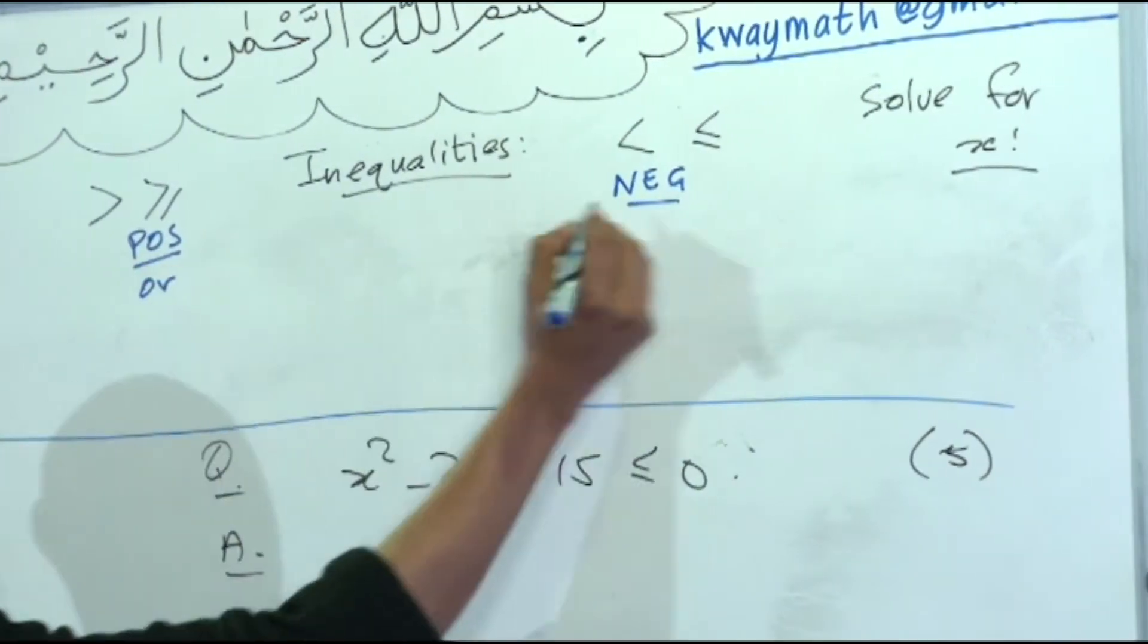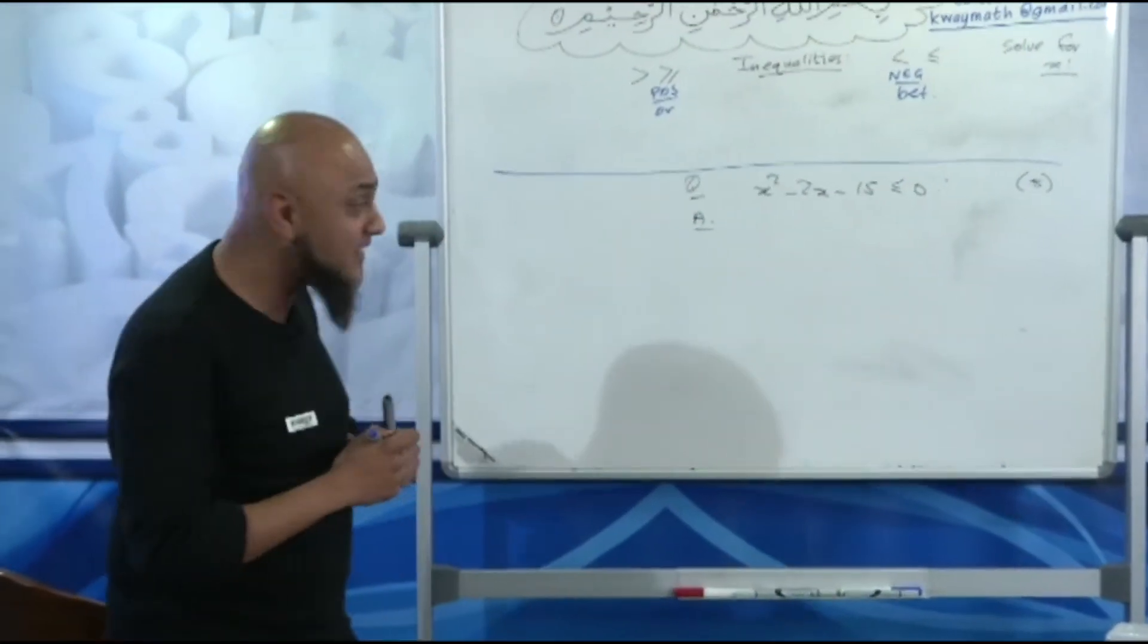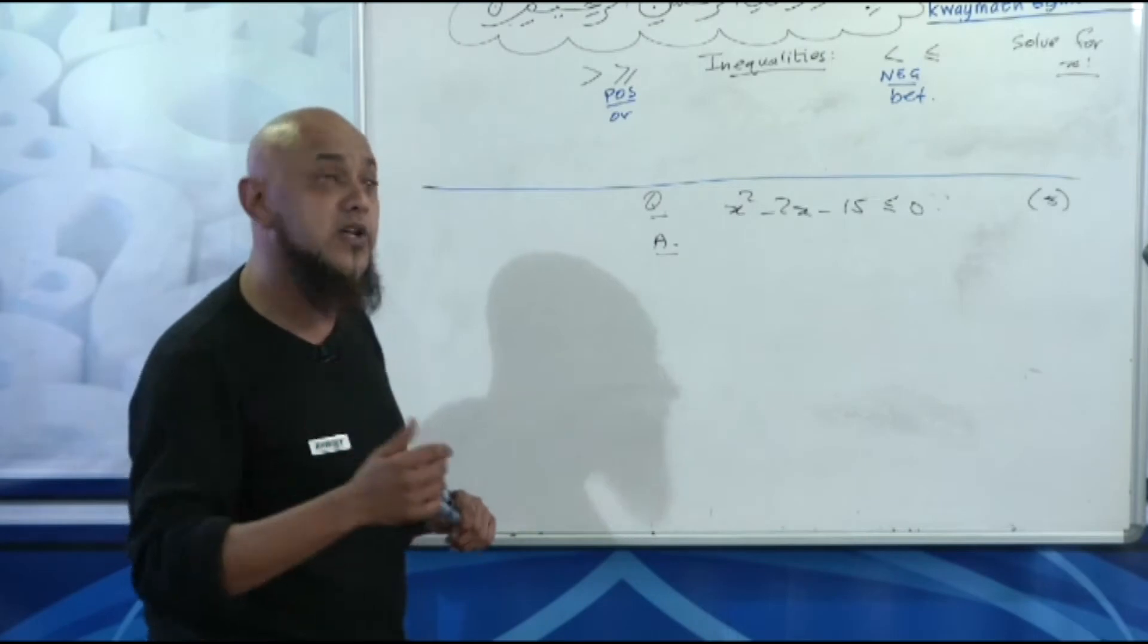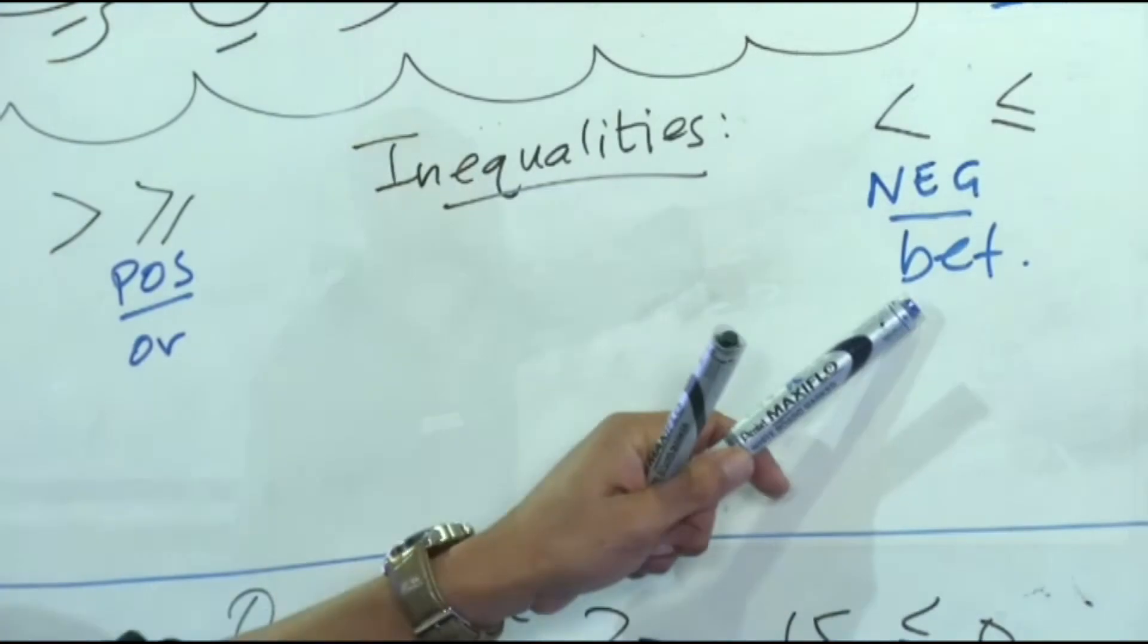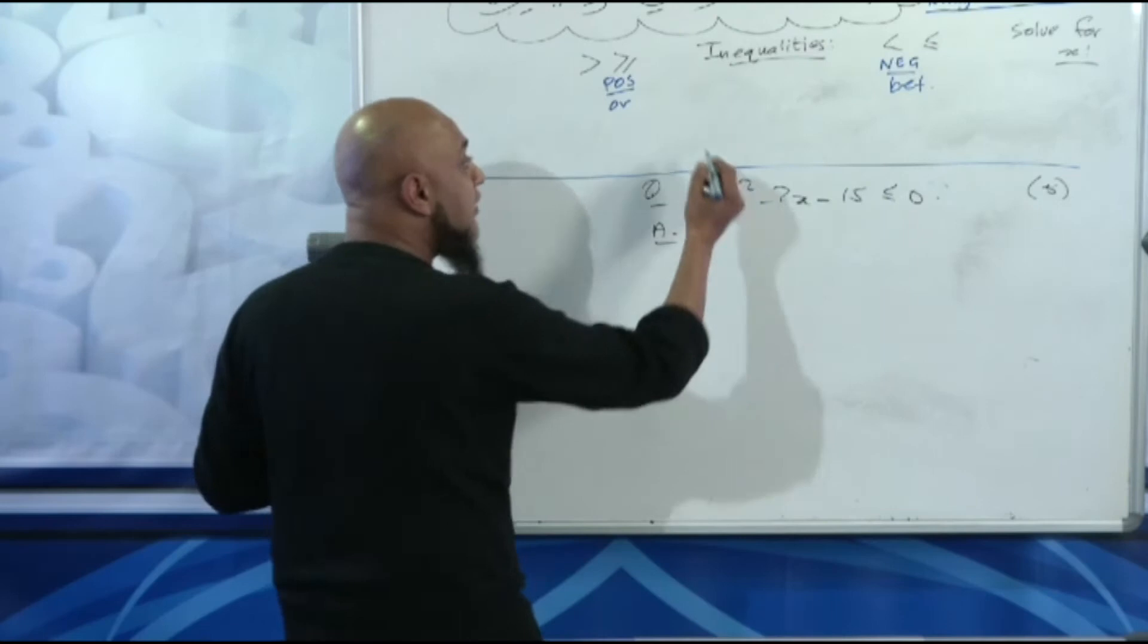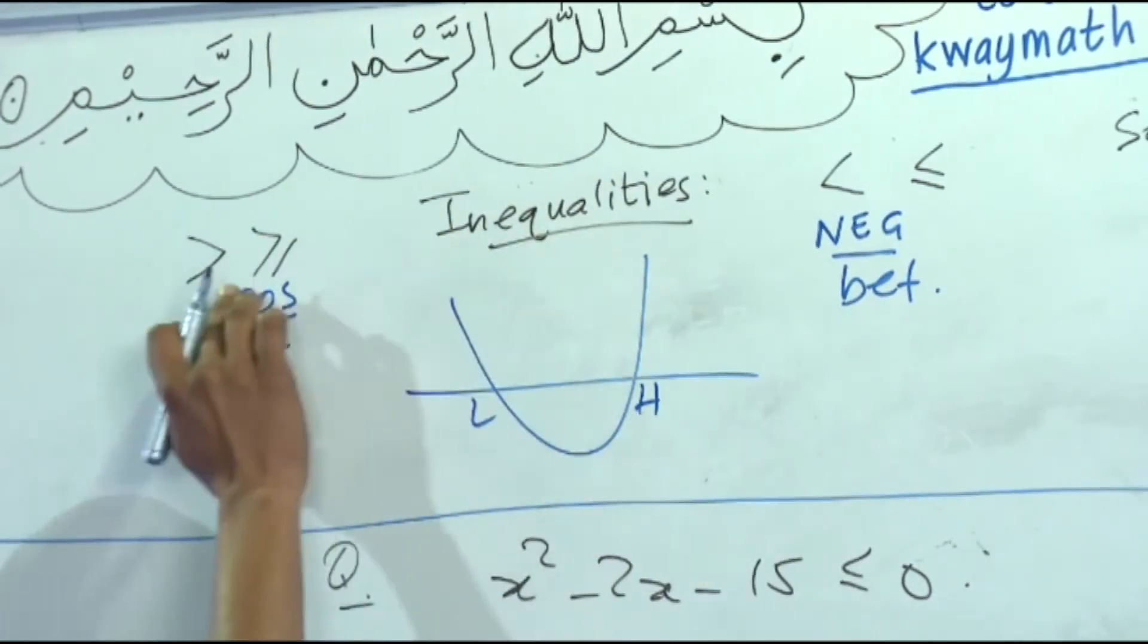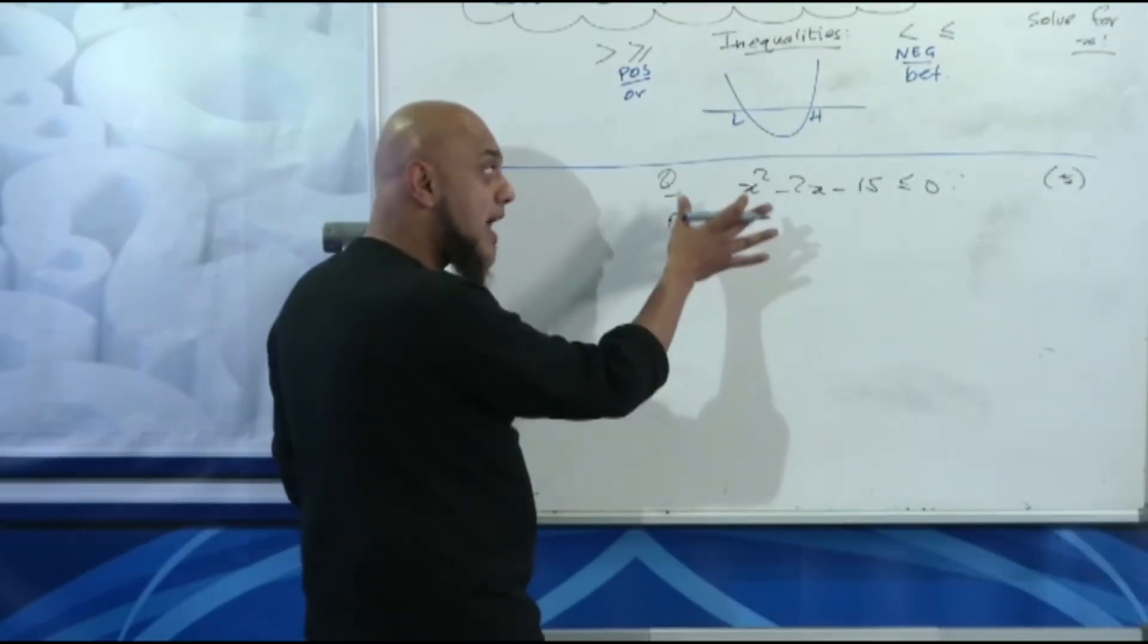Now you might be asking, what are you talking about here Mr. K? I'm here to tell you that within 10 seconds by using this system, you can answer this inequality. How do we do this? Positive you'll use the word OR, negative you'll use BET for between. What are we going to do? We're going to draw a rough parabola, lower critical value first, higher critical value second. Then we're going to check our inequality and we're either going to be using PAUS or NEG BET. Don't stress, I'm going to show you the examples.